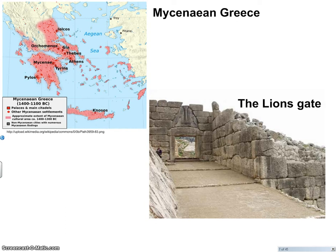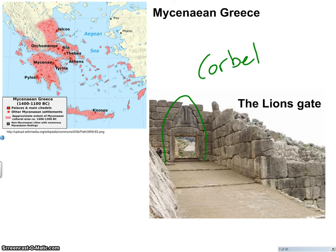One of the most famous relics of the Mycenaeans is what's known as the Lion's Gate. Each Mycenaean city-state contained a well-fortified fortress built on a hilltop, or acropolis. Mycenae was the largest and contained the Lion's Gate — the entrance to their palace. This is an amazing piece of architecture and engineering known as a corbel arch, spelled C-O-R-B-E-L. The stones are built gradually up and into it to make a very sturdy door. This type of architecture actually shows up independently in many different places — you'll see it again when we look at the Mayan culture.